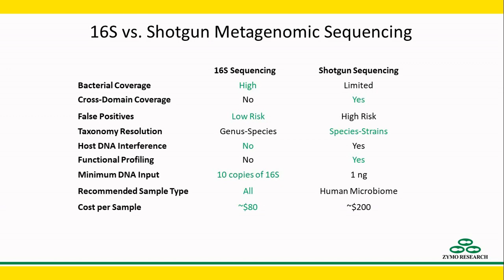Since the cost of sequencing continues to drop, shotgun sequencing is now possible for just around $200 per sample. Each sequencing method has its strengths, and the choice between them is not simply a question of budget. Your sample type and study goals are major factors in the decision.